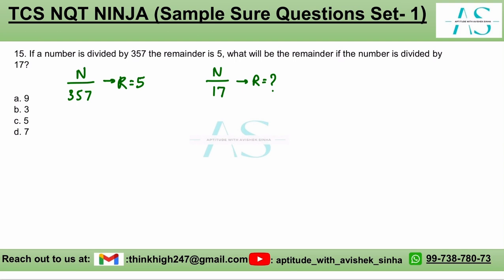How do we approach these type of questions? Let me break down the question for you. You are dividing this number by 357 and you are getting a remainder as 5. That means this number must be of the form 357x plus the remainder.